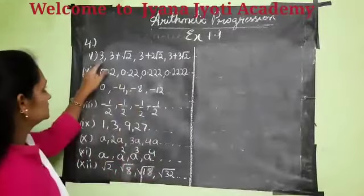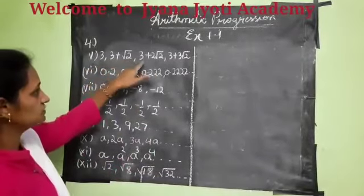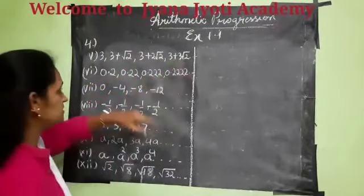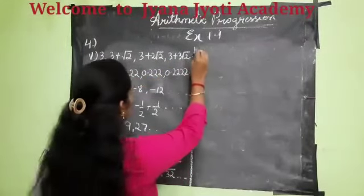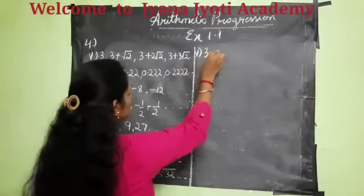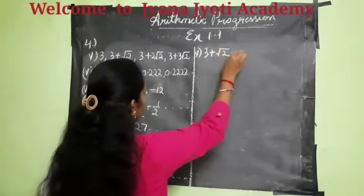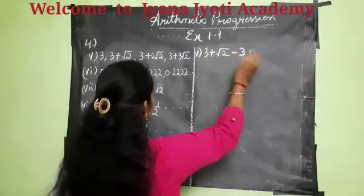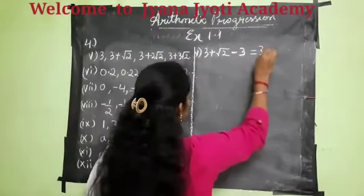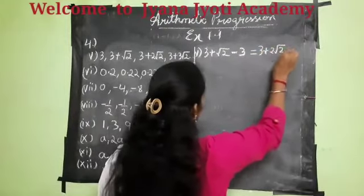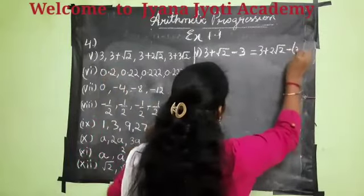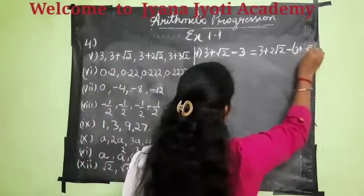So fifth one: 3, 3 plus root 2, 3 plus 2 root 2, 3 plus 3 root 2 is given. Let us find out the difference between the consecutive terms. Here, 3 plus root 2 minus 3 should be equal to 3 plus 2 root 2 minus (3 plus root 2).